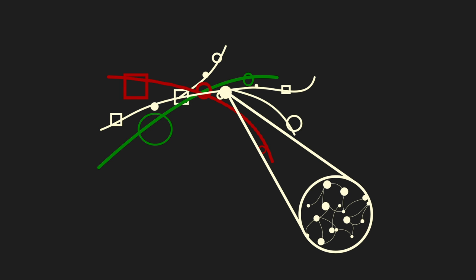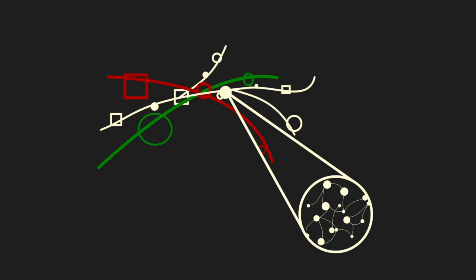This becomes more evident in Althusser's reformulation of contradiction. Here, again, the break from Hegel is demonstrated by a rejection of singularity. Borrowing from Mao, Althusser notes that there is not a single essential contradiction expressed in the social whole, but rather a complex of contradictions that produce several totalities. Marxist theoretical practice rejects the premise of the Hegelian dialectic, which is completely dependent on the radical presupposition of a simple original unity which develops within itself by virtue of its negativity, and throughout its development only ever restores the original simplicity and unity in an ever more concrete totality.